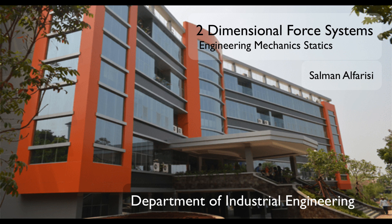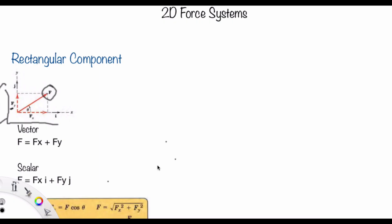Assalamualaikum warahmatullahi wabarakatuh. This discussion today will be on a two-dimensional force system where we have the rectangular component. We have the force F in rectangular form. Fx refers to the vector component of F in the X direction, and Fy is the vector component of F in the Y direction. So we can write that F equals Fx plus Fy.